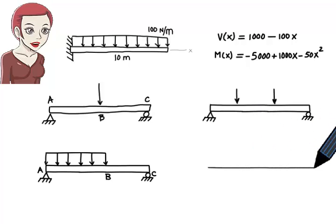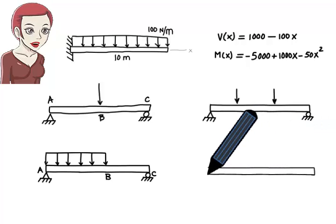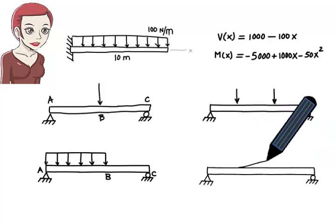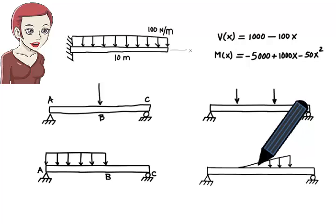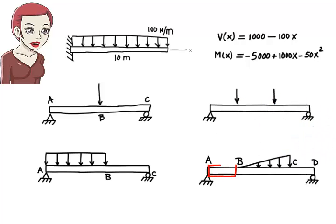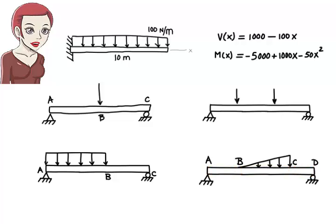In this example, the triangular load divides the beam into three segments: AB, BC, and CD. Therefore, we need three pairs of shear and moment equations, a pair for each segment.